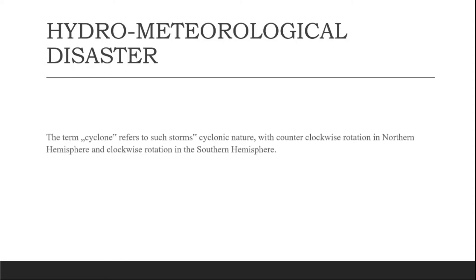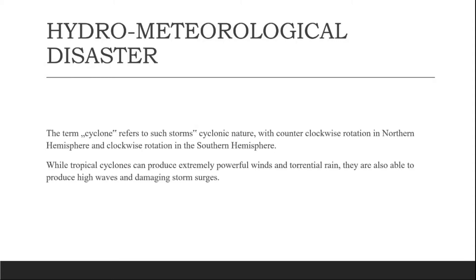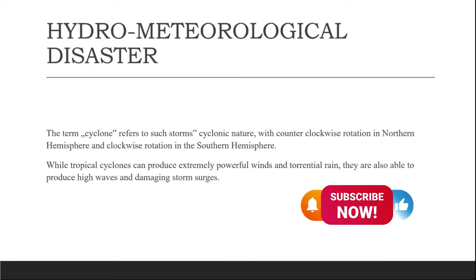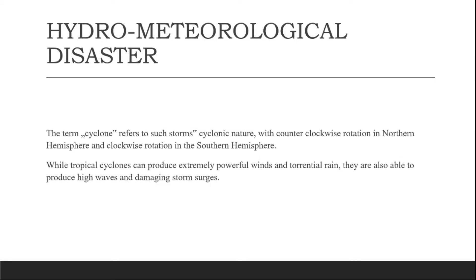A strong tropical cyclone usually harbors an area of sinking air at the center of its circulation — this area is called the eye of the cyclone. Weather in the eye is normally calm and free of clouds, although the sea may be extremely violent. The eye is normally circular in shape and may vary in size from 3 kilometers up to 370 kilometers in diameter.